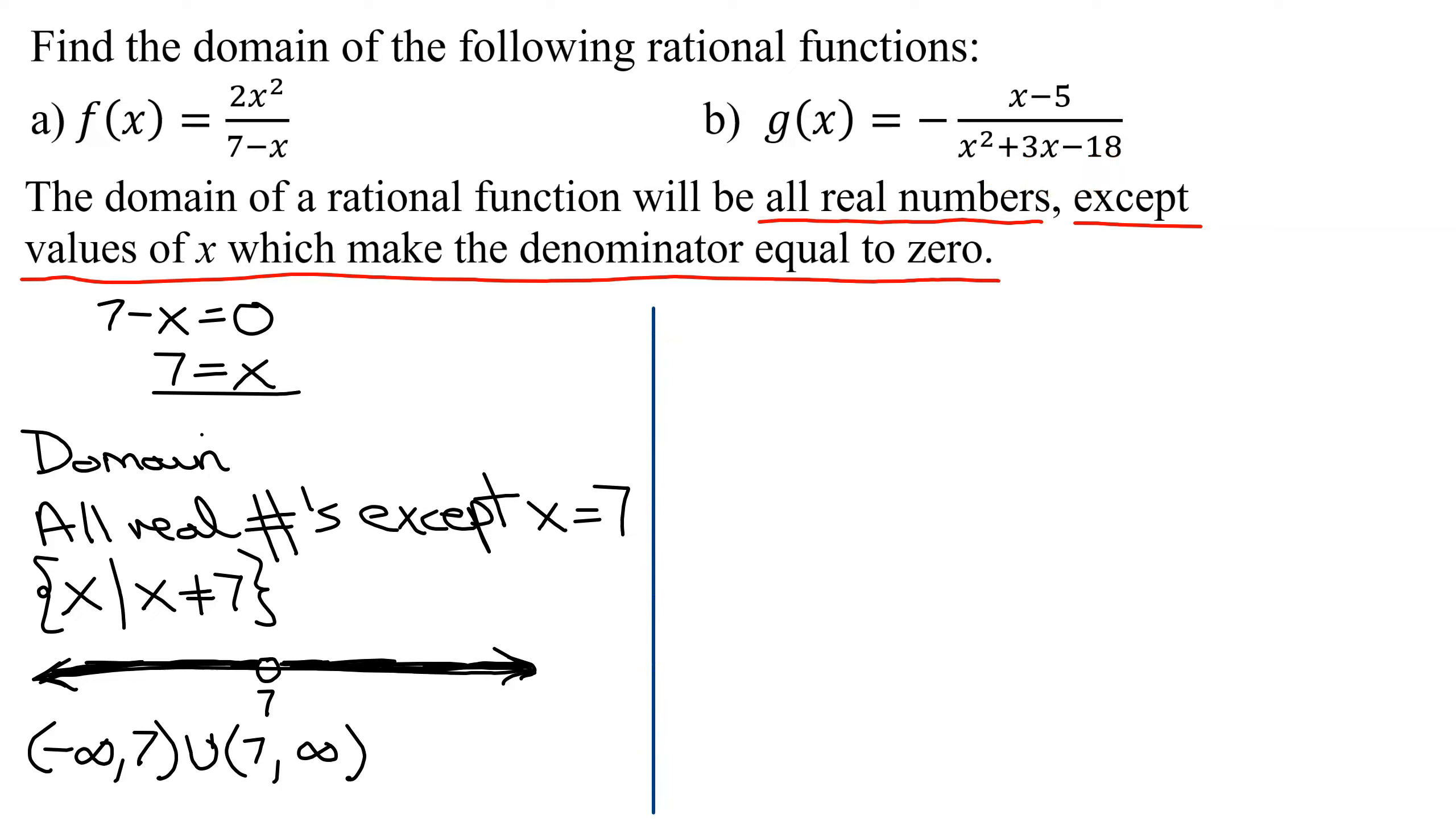We need to find the values of x that make the denominator 0. We're going to take our denominator, x squared plus 3x minus 18 and set it equal to 0 and solve this quadratic equation. As the leading coefficient of the x squared is a 1, this should be fairly easy to factor if it does factor.